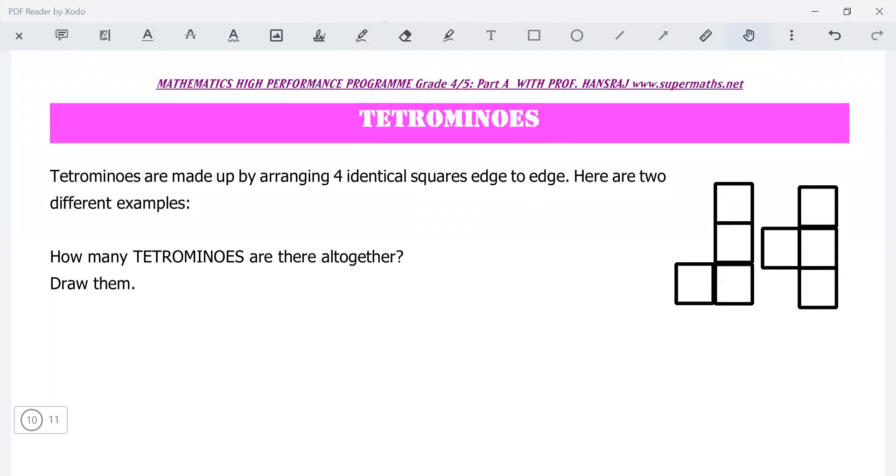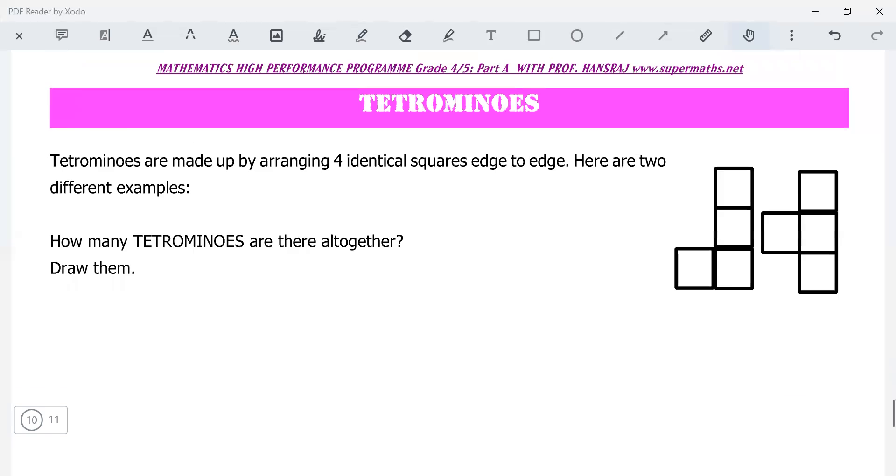Finally, we have these two types of problems which are famous problems. Tetrominoes are made by arranging four identical squares edge to edge. Here are two different examples. How many tetrominoes are there altogether? Draw them. Well, we've drawn two. I think you know this game very well. Have you heard of Tetris? Well, that will tell you how many there are. It's pretty easy to get that.